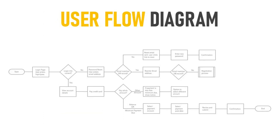Let's look at a flow diagram for a card payment. The user starts with a login page and there's a login flow. If the login is successful, the flow continues to view account details, select credit card, and choose which amount to pay. There are two paths: one for paying the balance or minimum payment due — where the user selects a payment account, selects a payment date, reviews the account, and submits with a confirmation. The other path covers cases where payment is less than the minimum due, showing a notice or other messages.